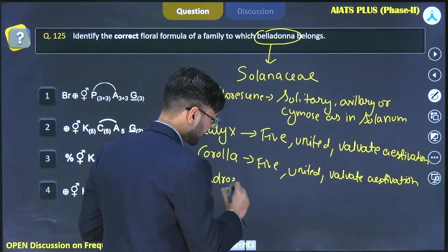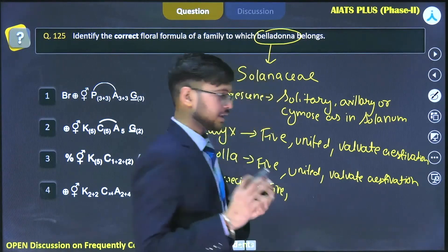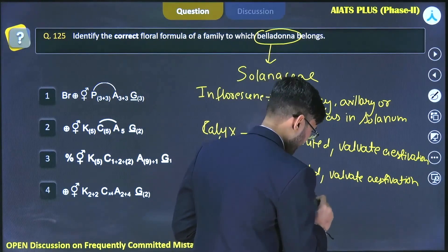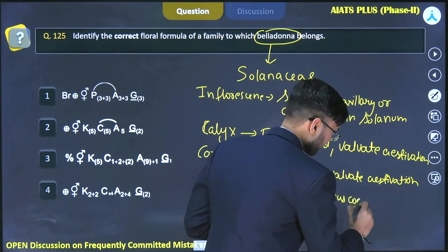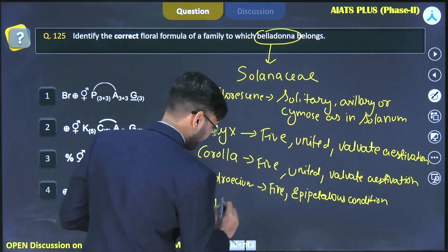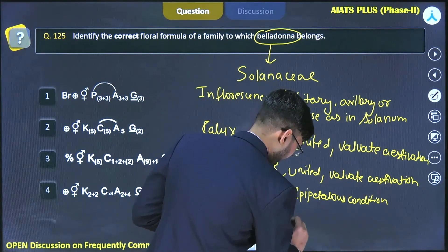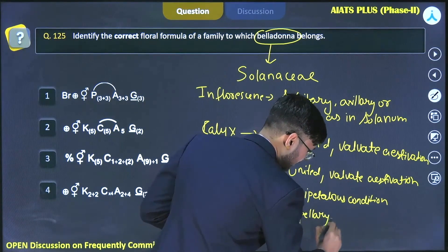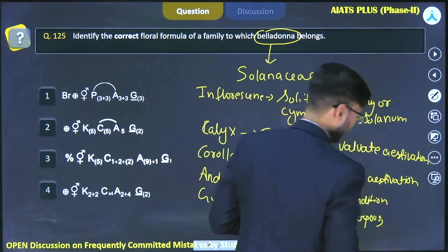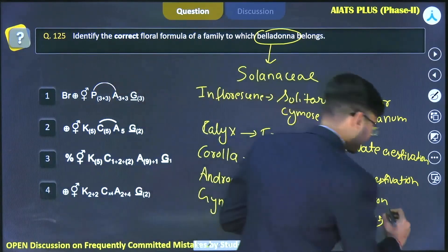The stamens are showing epipetalous condition. The gynoecium is bicarpellary and syncarpous, with swollen placenta showing axial placentation.